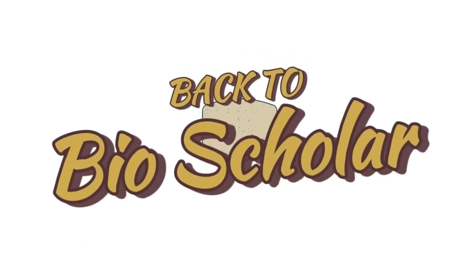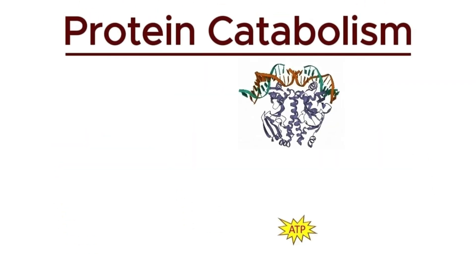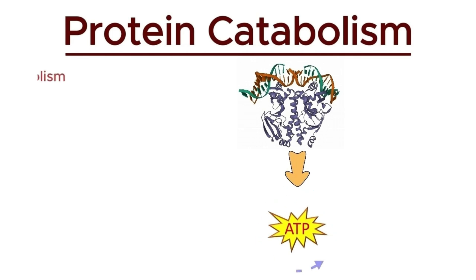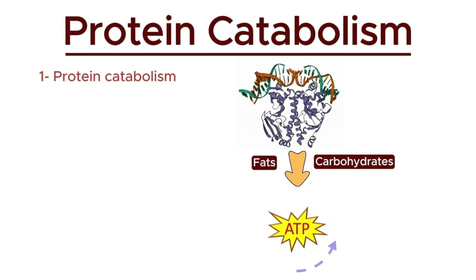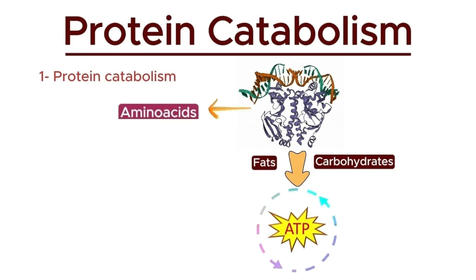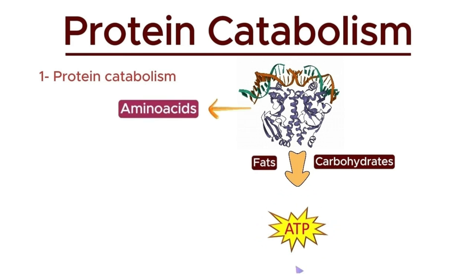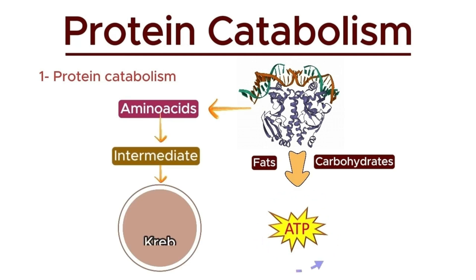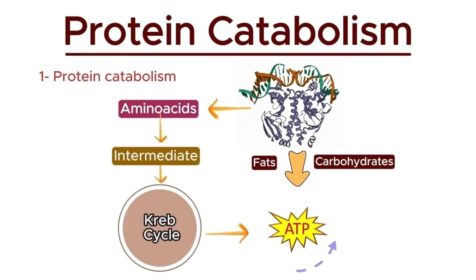Hello everyone, Bioscholar here. While proteins themselves do not directly produce ATP, they play crucial roles in the process. In situations where carbohydrates and fats are scarce, the body breaks down proteins into amino acids. These amino acids are then converted into intermediates that enter the Krebs cycle, contributing to ATP production.